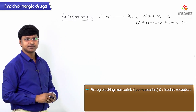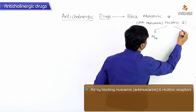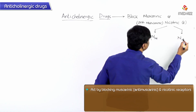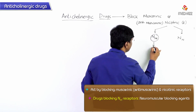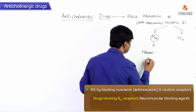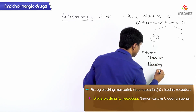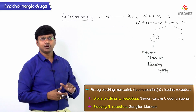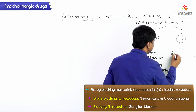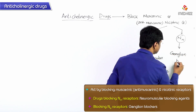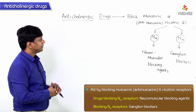For the nicotinic receptors, we have the NM receptors and the NN receptors. By blocking the NM receptors, these agents are called neuromuscular blocking agents. By blocking the NN receptors, they are called ganglion blockers.